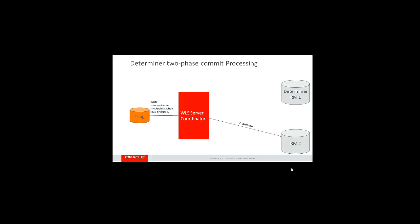After that, prepare will be called on all resources that are not determiners. These calls can be in parallel. Once the vote is received, the determiner resource is prepared last. Commit is called on all resources that are not determiners, and once the outcome of that commit call is received, commit is called on the determiner last.